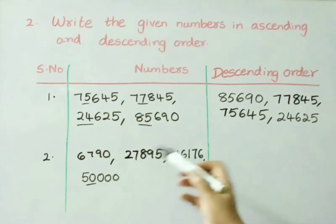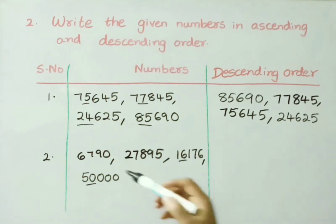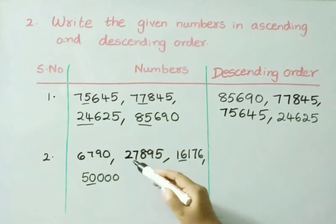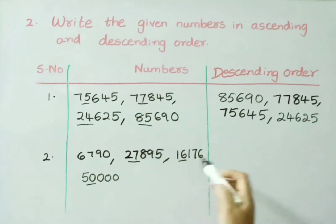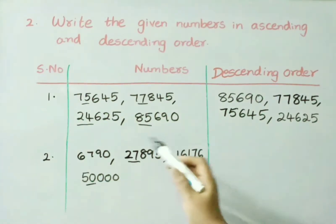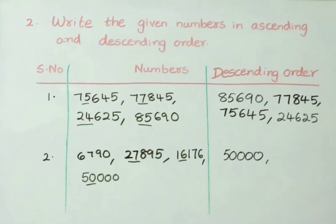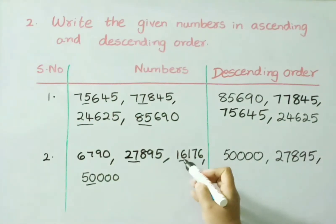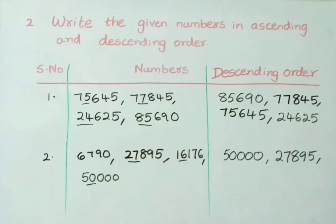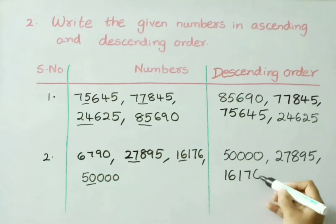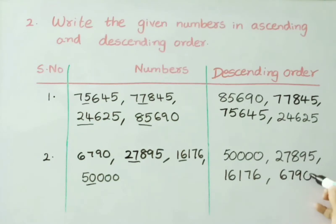See the second one. Among all the 4 numbers, which one is highest? 6,790 is a 4-digit number. Next: 27,000; 16,000 and 50,000 — all these 3 are 5-digit values. Among all 3, which one is greatest? 50,000. So, first write 50,000. Next highest: 27,000 or 16,000 — 27,000 is greatest, write 27,895. Next, 16,176 is a 5-digit number, 6,790 is a 4-digit number — obviously the 5-digit number is greatest, so write 16,176. And last: 6,790. We have arranged the numbers in descending order, that is greatest to smallest.